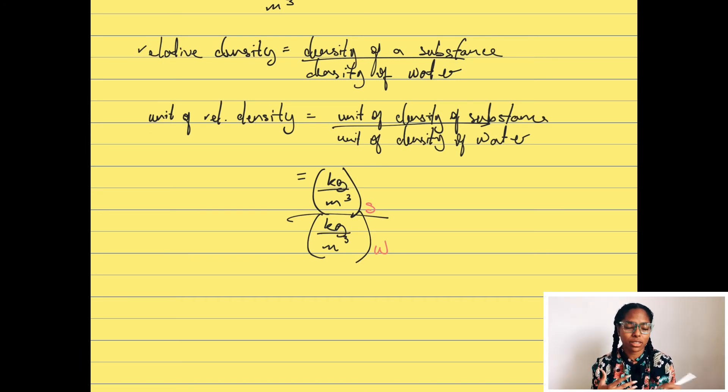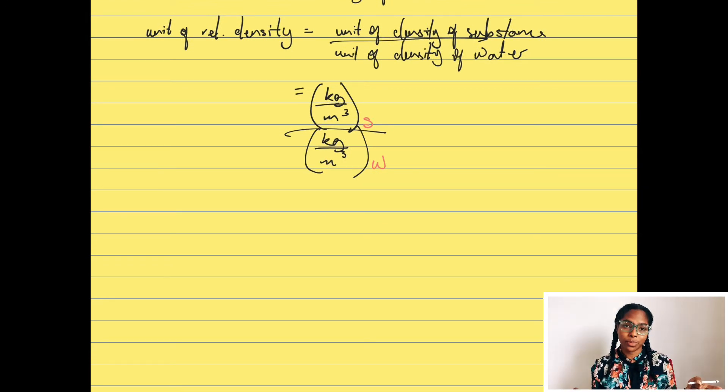How do we simplify this? Well, we can see that we're dividing fractions. When we're dividing fractions, what do we do? Change the division to multiplication and we flip the second fraction. So we have kilogram per meter cubed for the substance, multiplied by—remember we're flipping the second one—so then it will become meters cubed over kilogram, and this is for water.